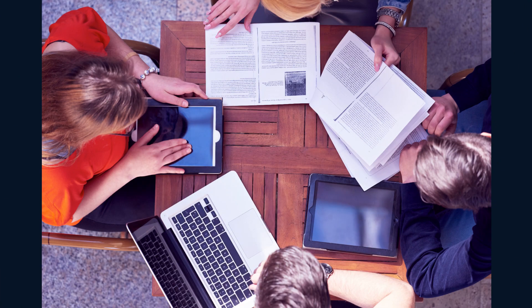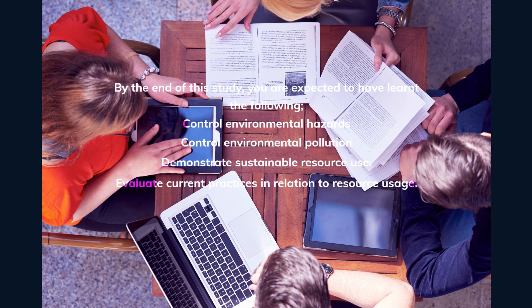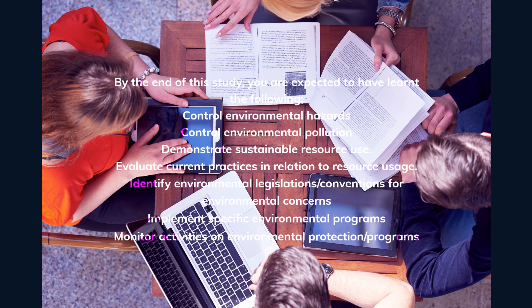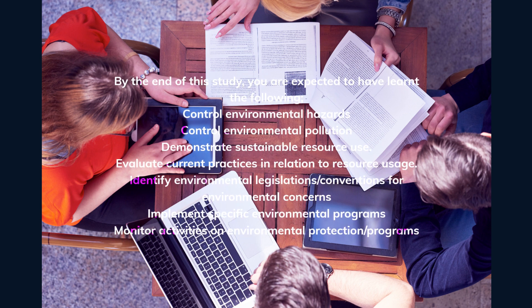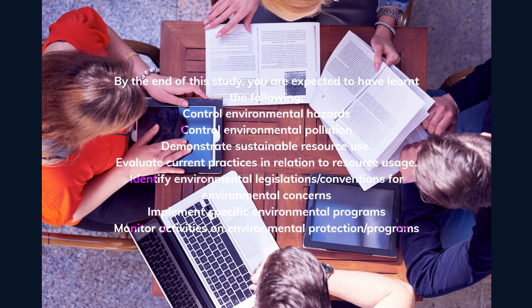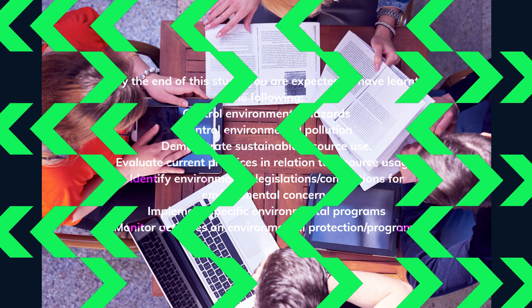By the end of this course you are expected to have learned the following: one, control of environmental hazards; two, control of environmental pollution; three, demonstrating sustainable resource use; four, evaluate current practices in relation to resource usage; five, identify environmental legislations or conventions for environmental concerns; six, implement specific environmental programs; and lastly, monitor activities on environmental protection through programs.